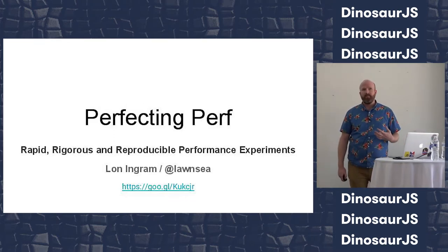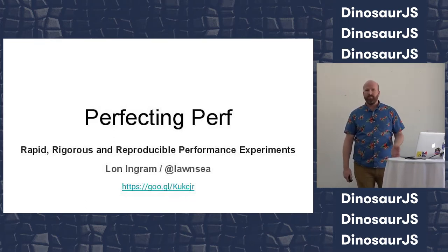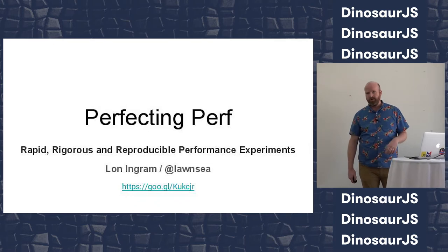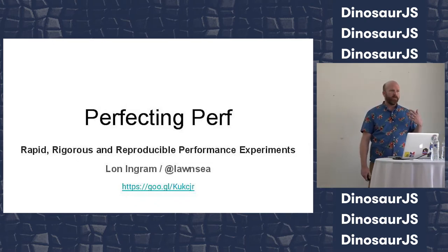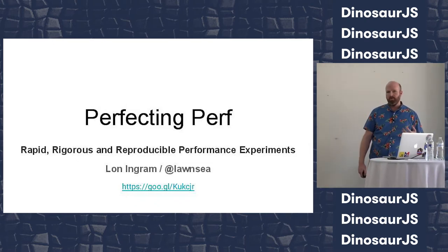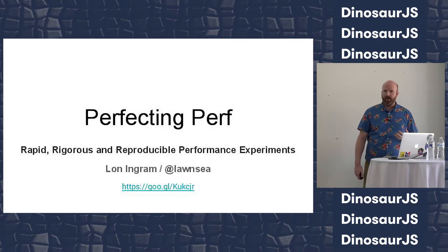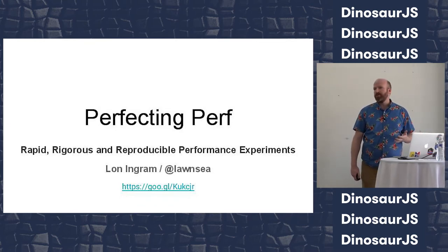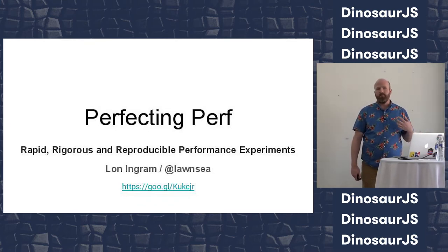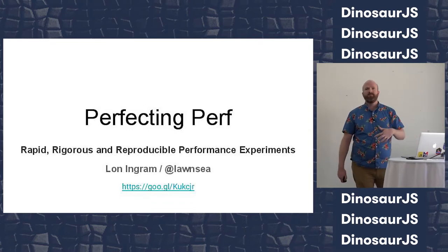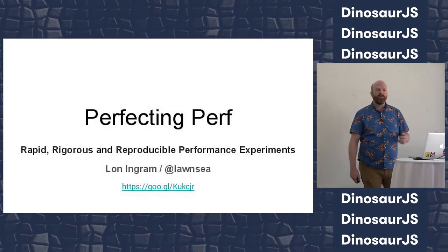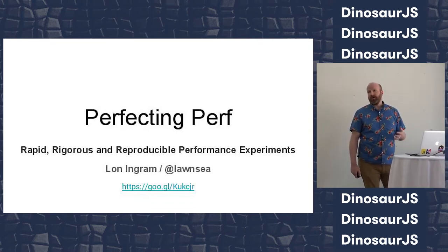Specifically, we're going to talk about how to do performance experimentation in a way that's rigorous — meaning you have a clear and formal process — that it's reproducible so other folks can reproduce your results and get something like the same result, and rapid, so it doesn't take forever.